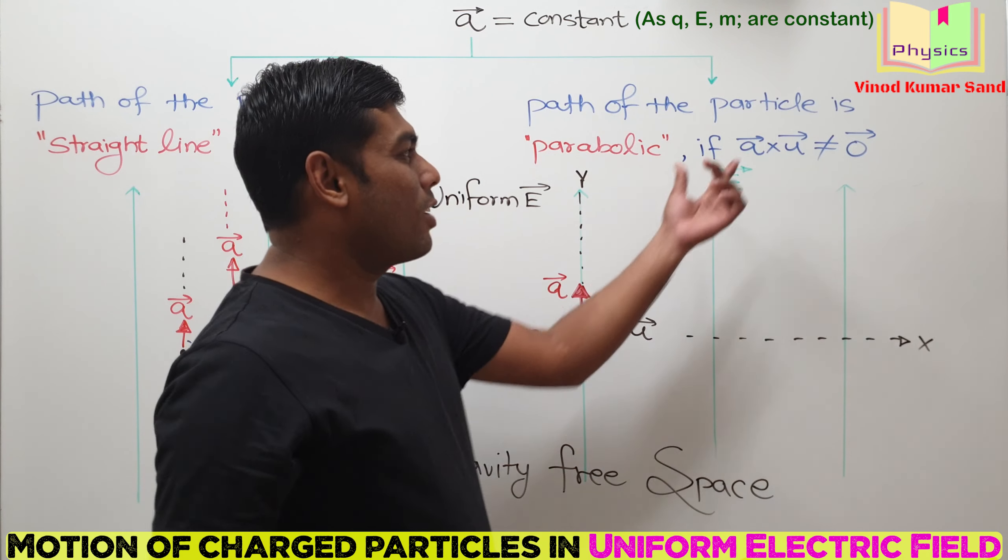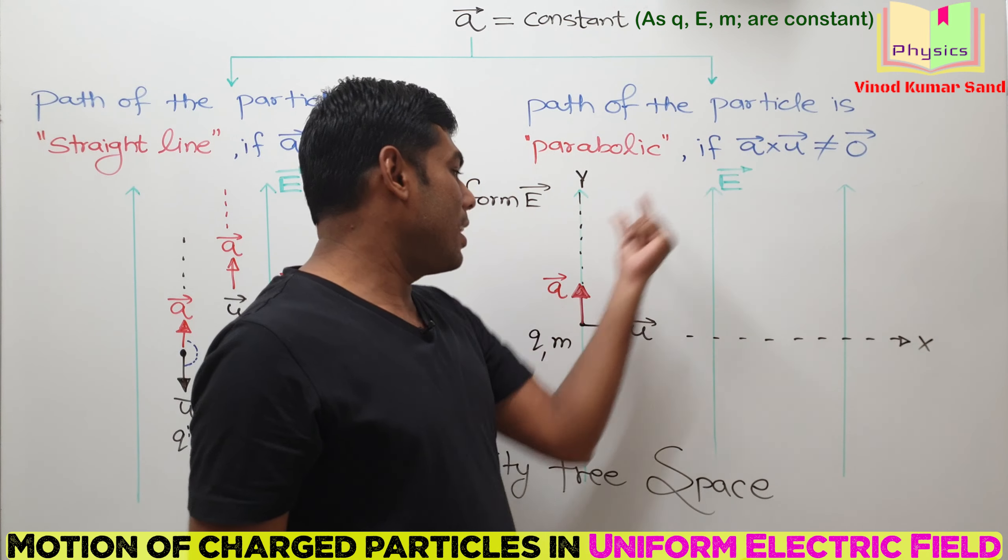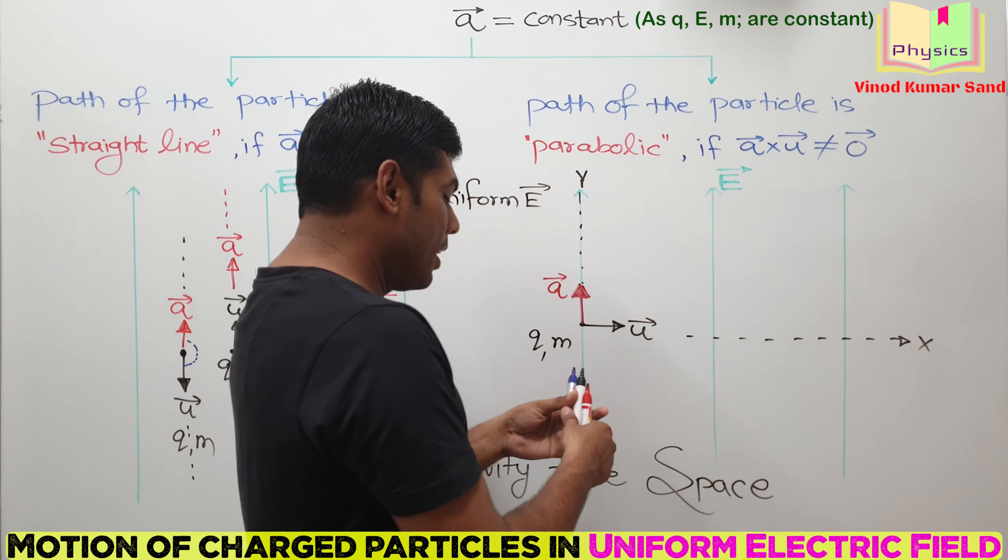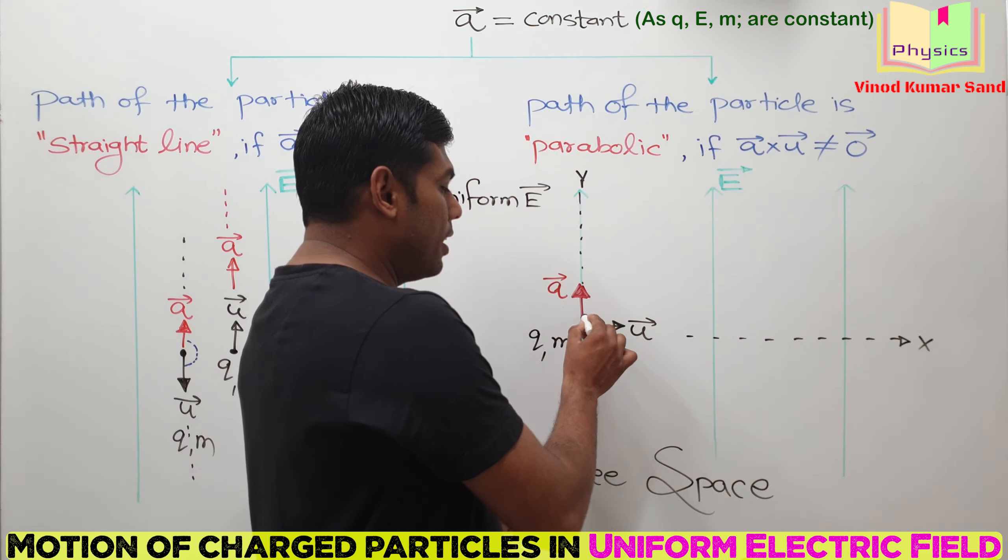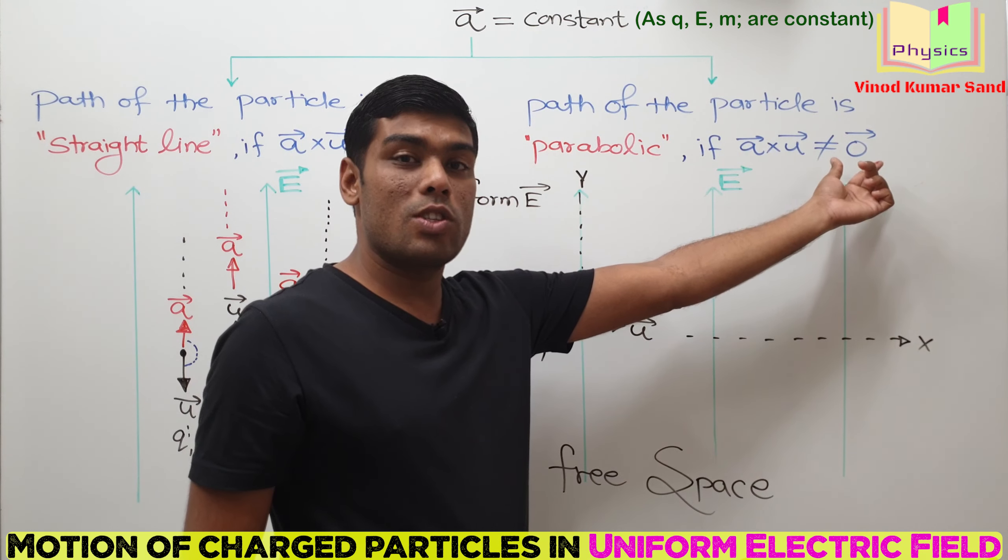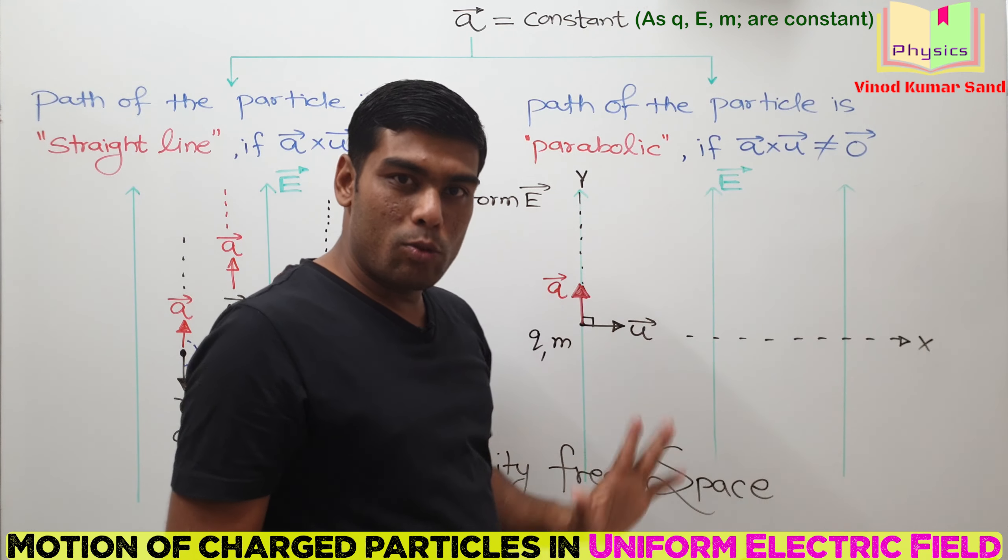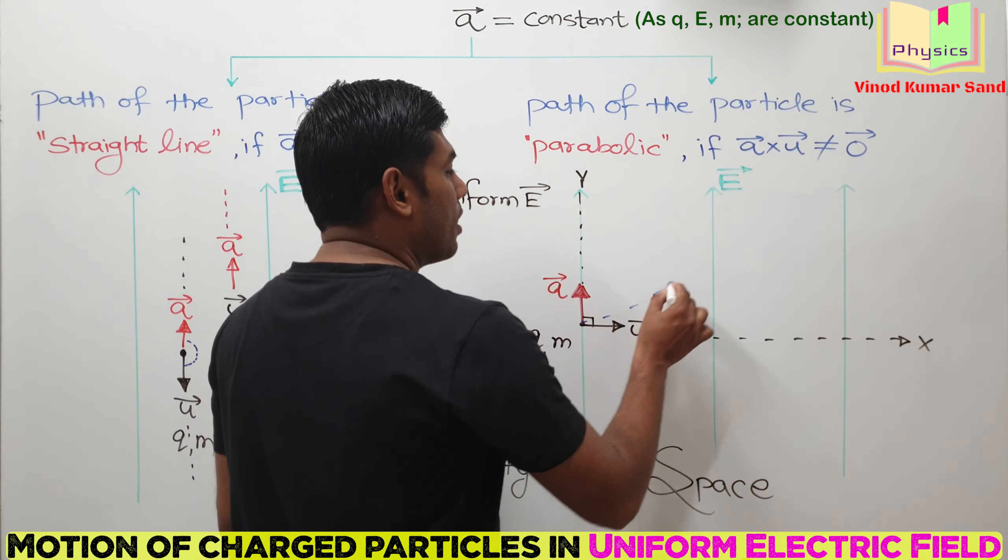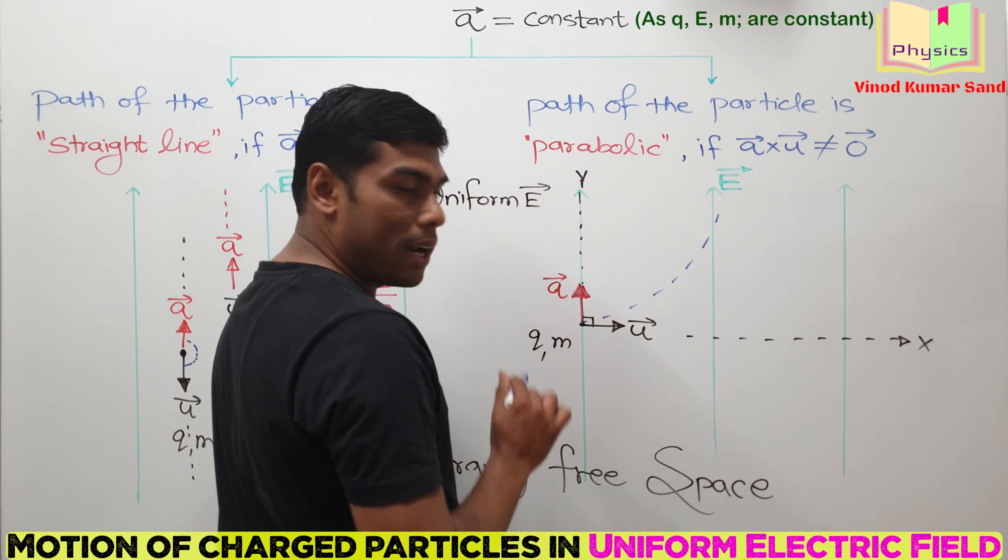What will be the path of the particle? According to this, A cross U, when we operate, A is non-zero, U is non-zero, and there comes sine 90 degree. Angle between A vector and U vector is 90 degree, so the resultant is non-zero. Path will be parabolic. Let us prove it.